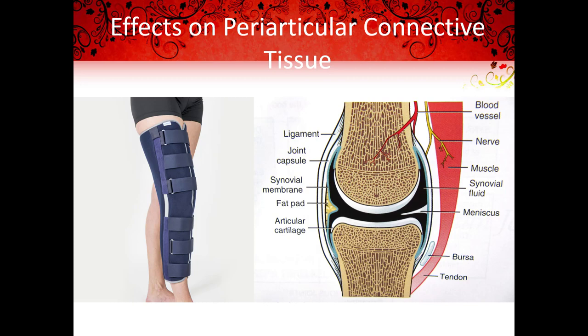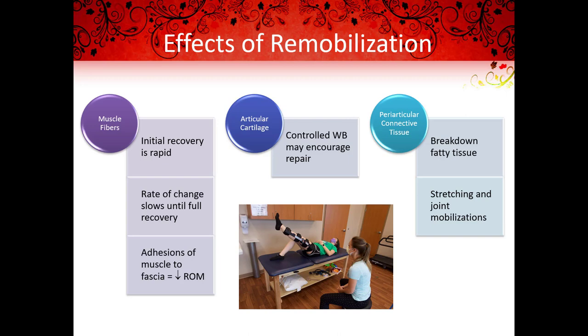Periarticular connective tissue is soft tissue surrounding a joint, such as ligaments, joint capsules, fascia, tendons, and synovial membranes. These connective tissues become thick and fibrotic, and as this occurs, there is a lot less motion in the affected joint. In the early 20th century, injuries were commonly immobilized for several weeks following surgical repair. We now know that there are many disadvantages to prolonged immobilization and many advantages associated with early remobilization.